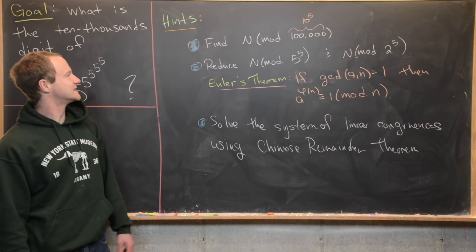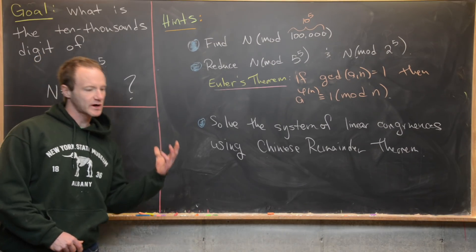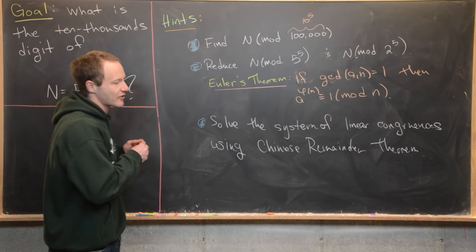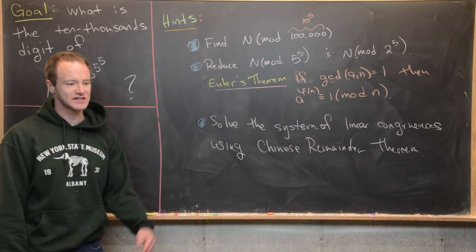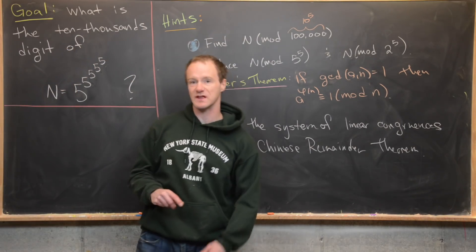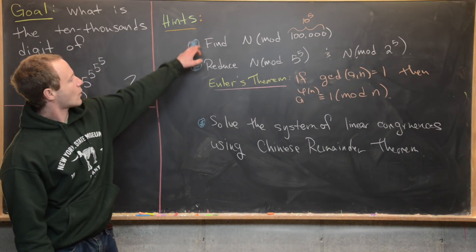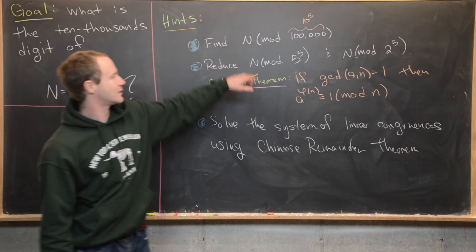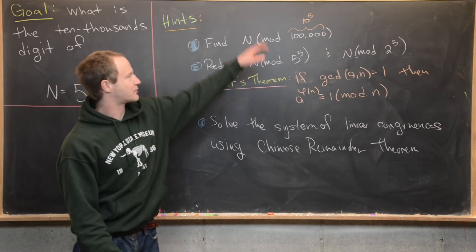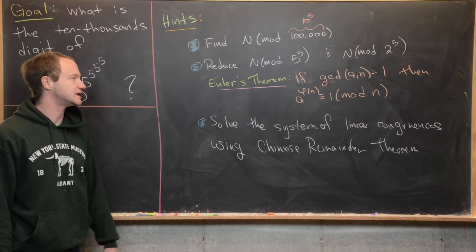The first step is to find N modulo 100,000. Notice that working modulo 100,000 — which is also 10 to the five — is like throwing away all of the digits past that fifth digit. Since we're interested in that fifth digit, we retain all the information we need. To do that, we'll want to reduce this modulo five to the five and two to the five, because that's the prime factorization of 10 to the five. We can do that using Euler's theorem.